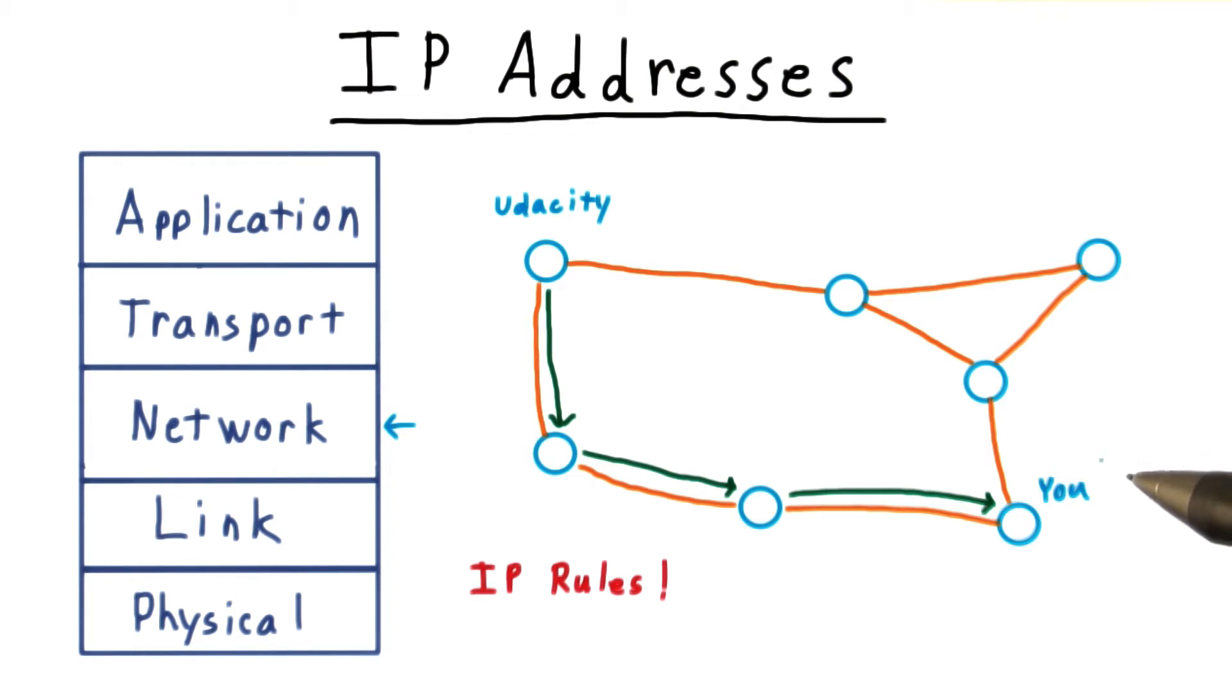Whereas other layers use a variety of technologies and protocols, the network layer really only uses IP, which is short for Internet Protocol.